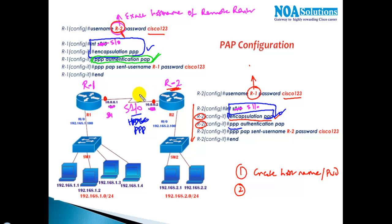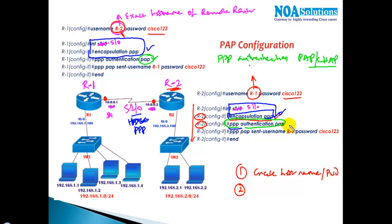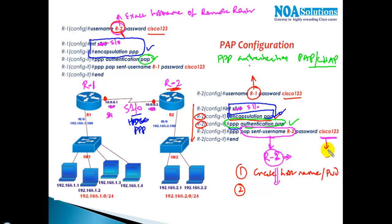Once you decide to enable authentication, use the command 'ppp authentication pap' or 'ppp authentication chap' depending on which method you want. For PAP specifically, there is one additional command required on the interface: 'ppp pap send-username', specifying the local hostname and password. This manually generates the credential send process since PAP requires it to be initiated manually.